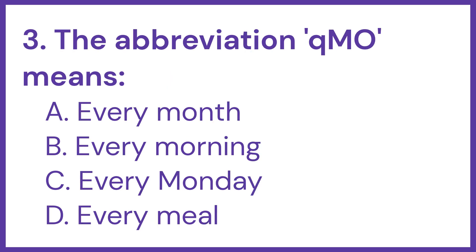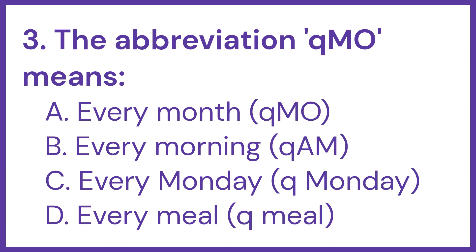Third question. The sign QMO means: option A, every month; option B, every morning; option C, every Monday; option D, every meal. The answer is every month. QAM would be every morning. Every Monday can be written as QMonday, and QMeal for every meal.